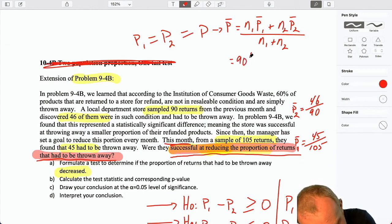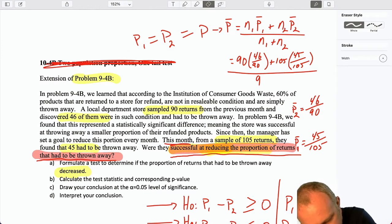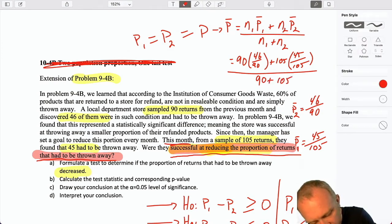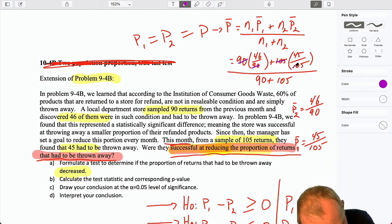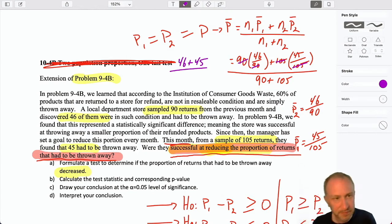So here my sample size is 90, 46 over 90, plus 105, times 45 over 105, divided by 90 plus 105. So once again, we see the result of that assumption. All of these just cancel out. And this gives me, let's come over here, 46 plus 45, which again, we're no longer distinguishing between whether it's population 1 or population 2. There's no more subscripts here.